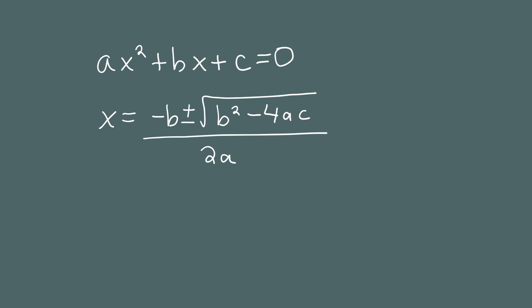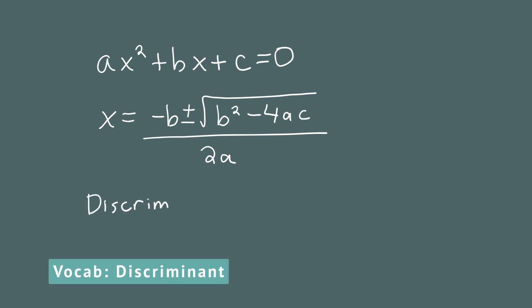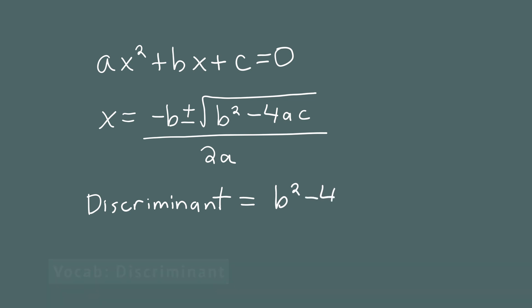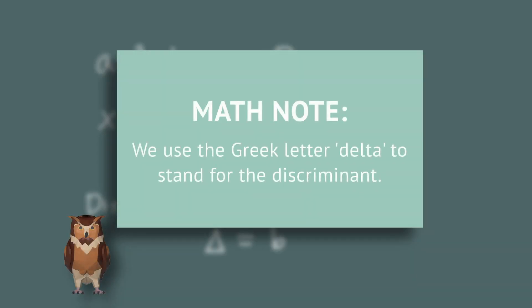In the quadratic formula, the number under the radical — under the square root sign — b squared minus 4ac, that number is called the discriminant. You don't have to write the word discriminant out; there's a shorthand for that. We use the capital letter delta from the Greek alphabet to stand for the discriminant.